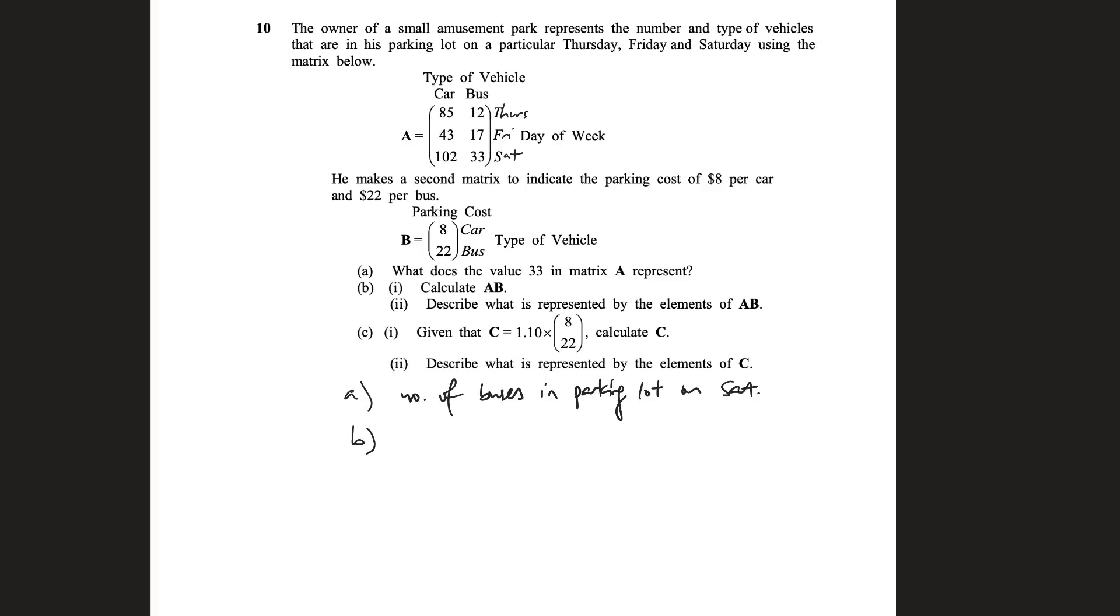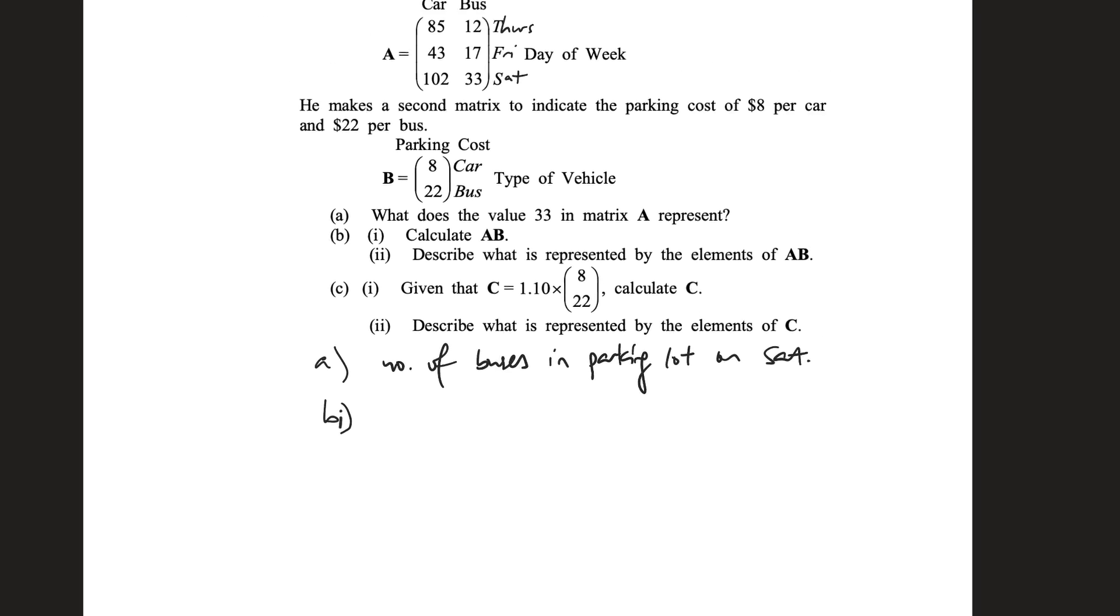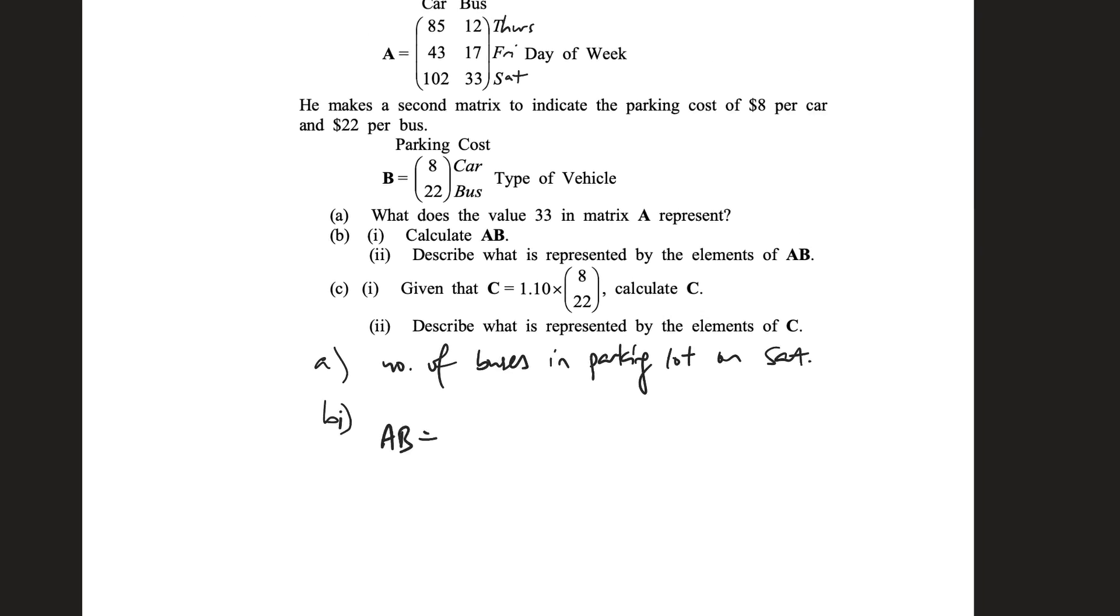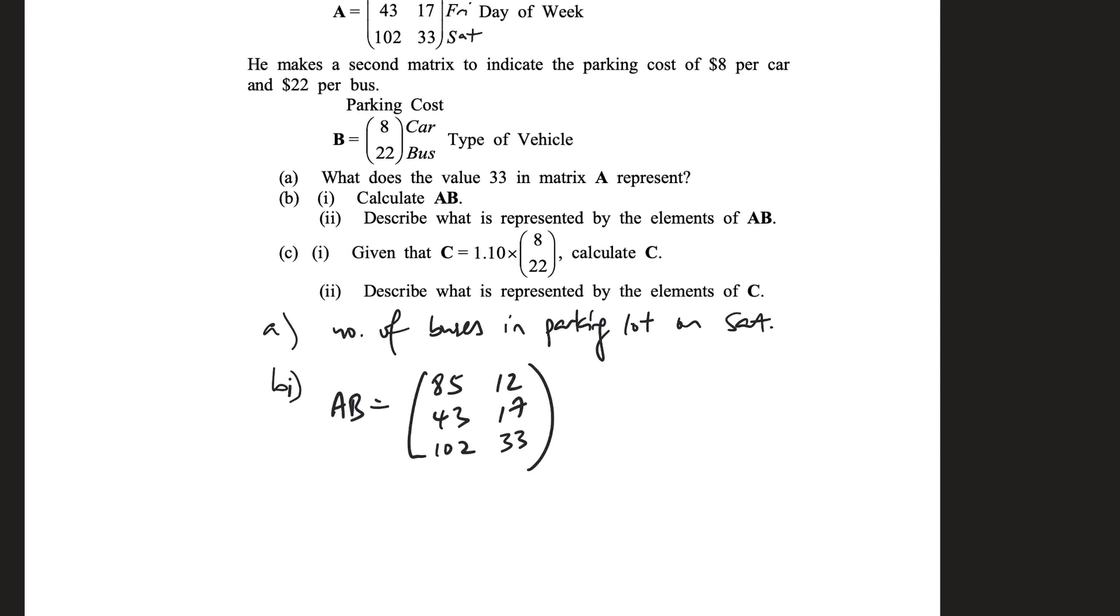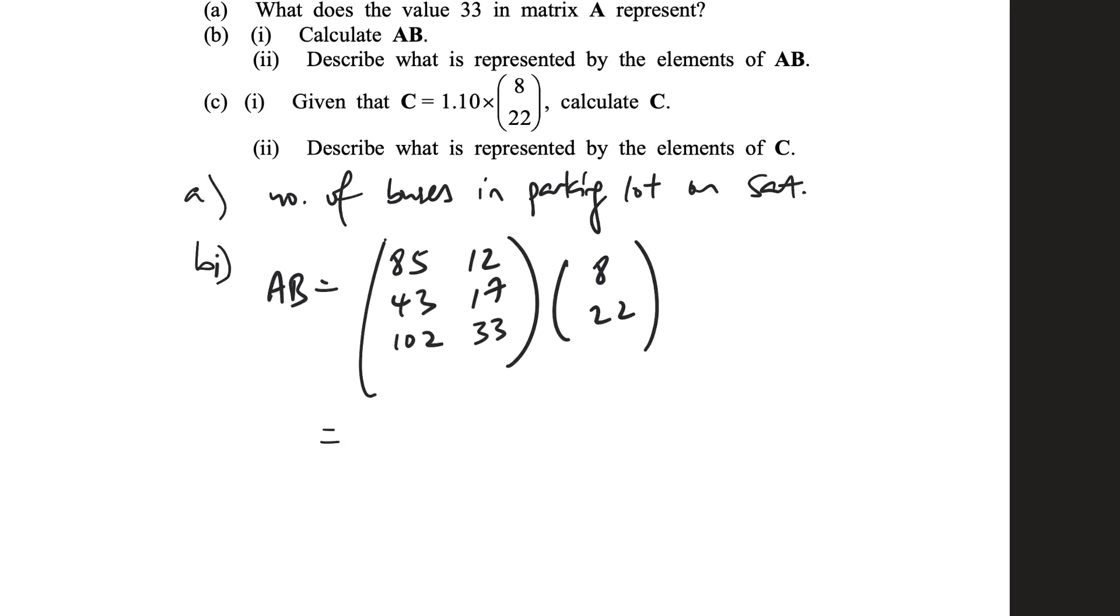Part B(i), and they say calculate matrix AB. So let's just write it down. AB is simply A multiplied by B. And here you can see this is a 3 by 2 matrix and it is a 2 by 1 matrix. The 2s are the same, so that's fine. It means they can be multiplied.